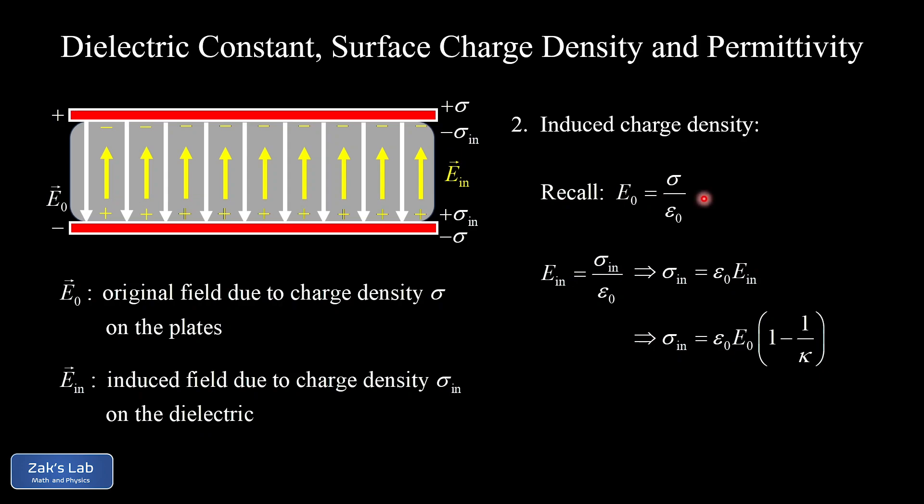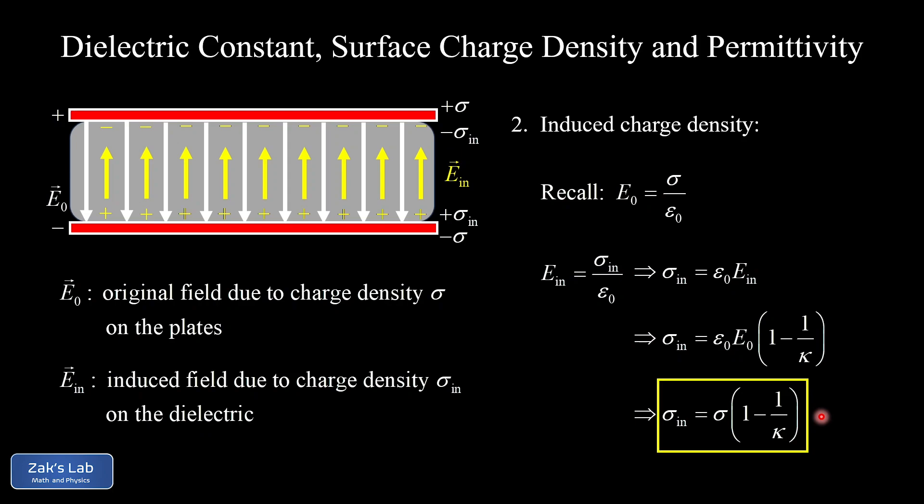At this point we see epsilon_0 times E0 out in front, and we can go back to our original field and write sigma equals epsilon_0 E0, where sigma is the charge density on the capacitor plates. So we arrive at an expression for the induced area charge density on the surfaces of the dielectric slab: sigma_induced equals sigma times the quantity (1 − 1/kappa). That's our second boxed equation.